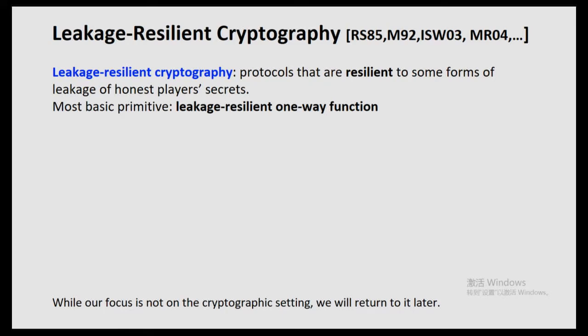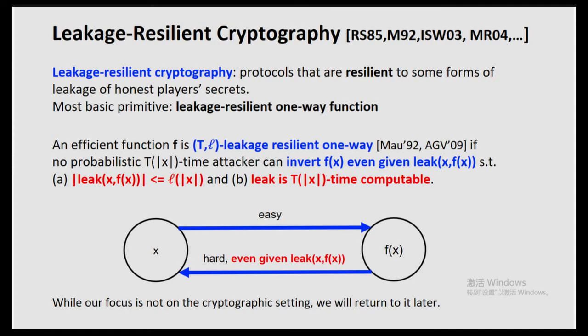Today, let's talk about the most basic primitive in leakage-resilient cryptography: namely, leakage-resilient one-way functions. There are two parameters of interest. The first is T, which stands for the running time bound for attackers — we care about attackers that run in time T. The second is L, the amount of leakage. If the leakage is too large, then we know everything from the honest party's secret and there's no security at all. So we bound the amount of leakage the adversary can obtain by L.